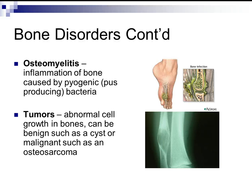Bone tumors are abnormal cell growth in bones. They can be benign, meaning non-cancerous, such as a cyst, or malignant, such as an osteosarcoma. Osteosarcomas are typically seen in young children in the tibia or fibula.